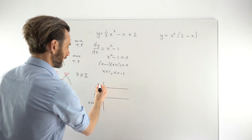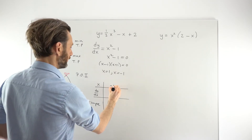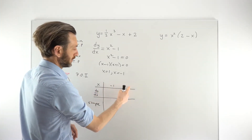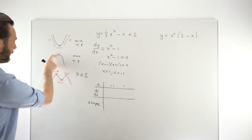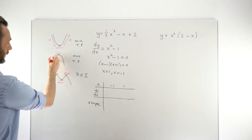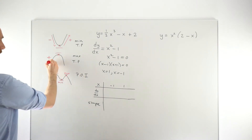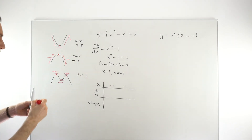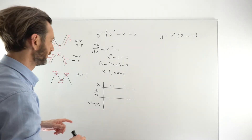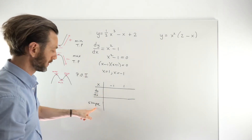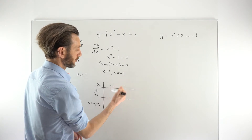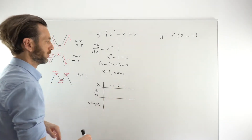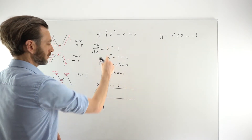We put our stationary points into the x row in numerical order: minus 1 first, then 1. We look at values to the left and right of each stationary point. If you test the derivative to the left of a stationary point, it should be positive because the function is sloping up. To the right, it should be negative because the function is decreasing. At the stationary points, the derivative is zero, so we put zeros in straight away.